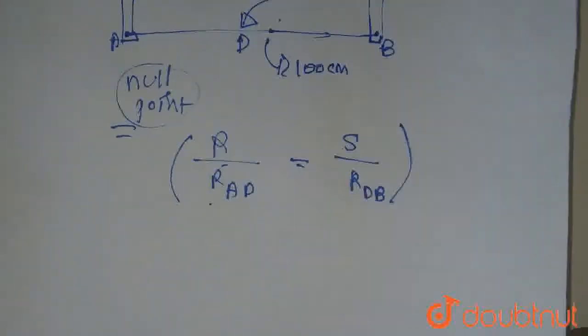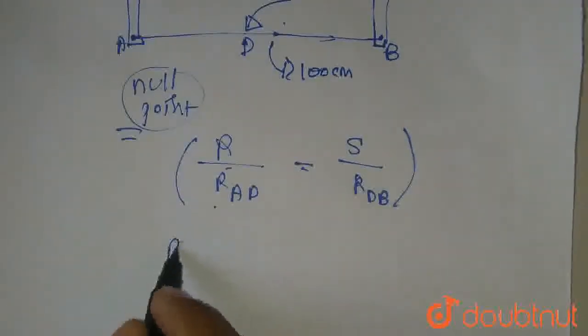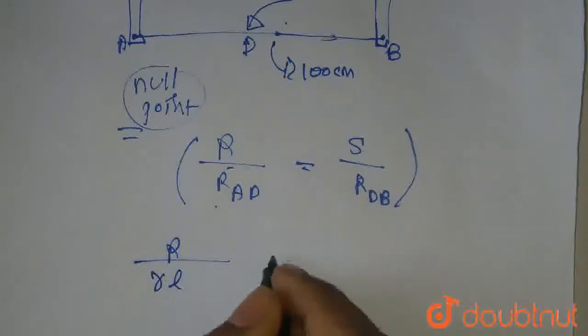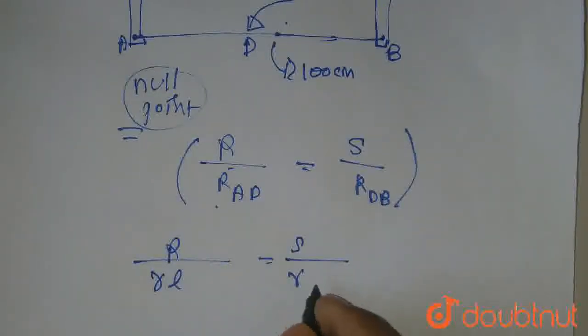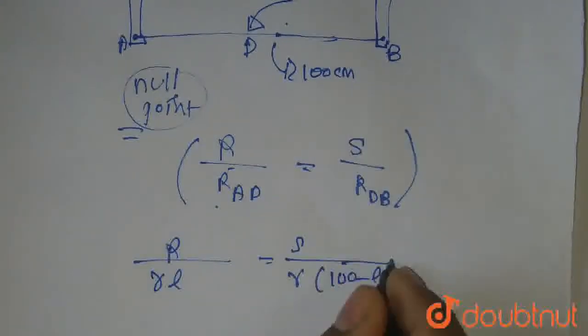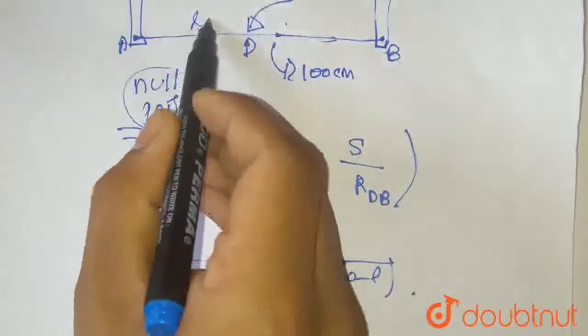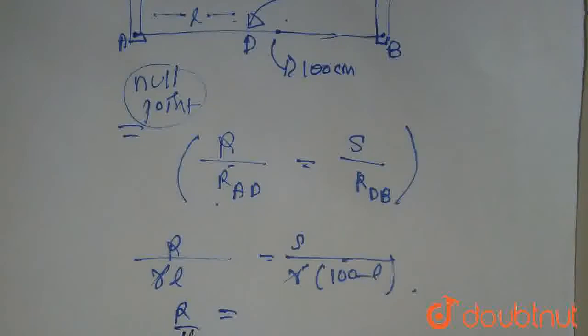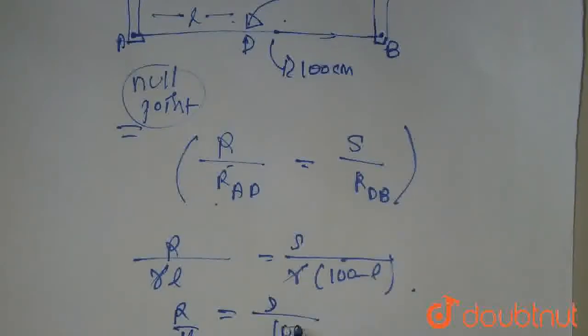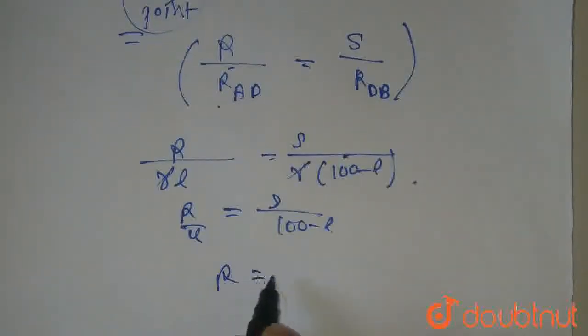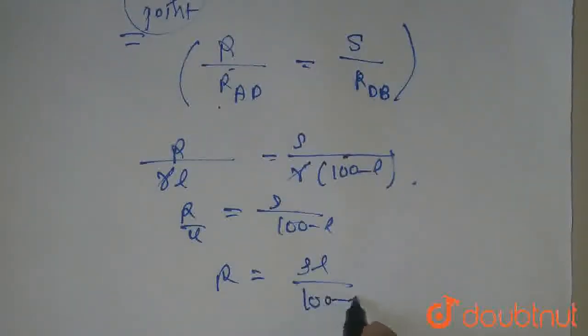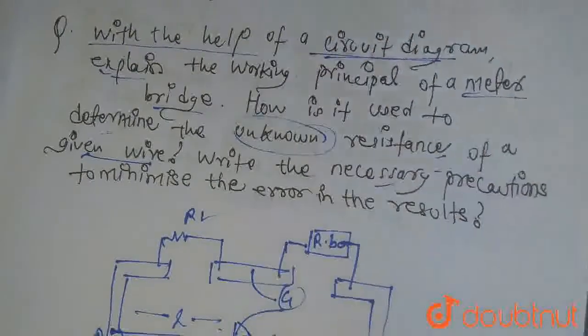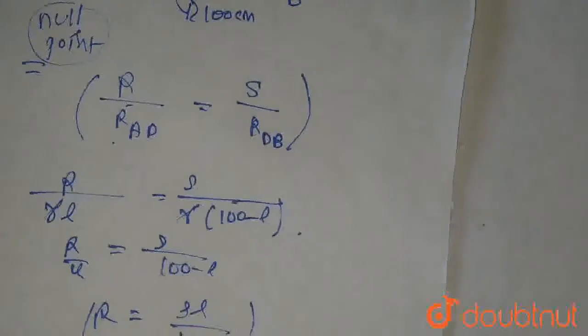So now we can see the resistance R across AD, R into L, will be equal to S into 100 minus L. And we can see R is equal to S times L divided by 100 minus L. So this is the unknown resistance. In this way we can find the unknown resistance, and our setup with the galvanometer is in this way.